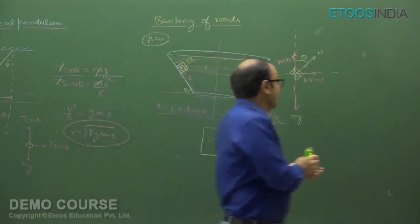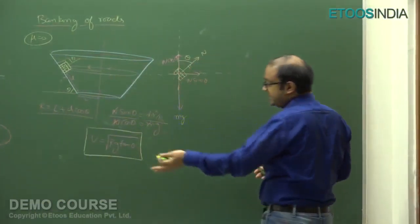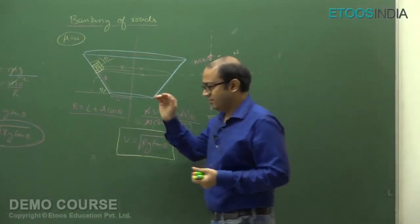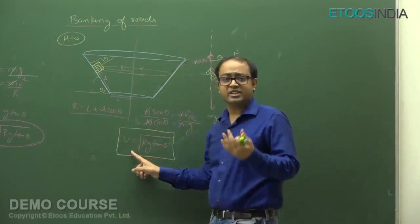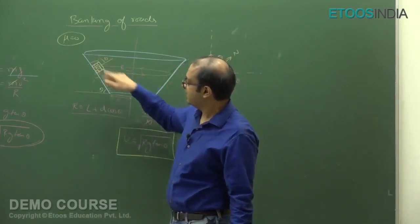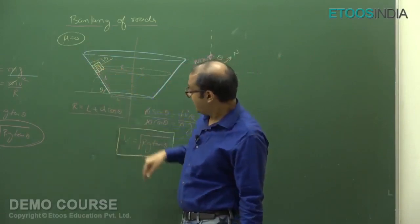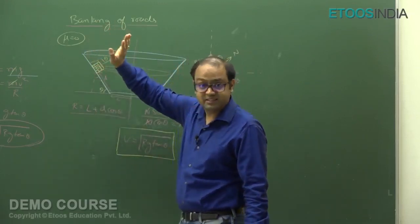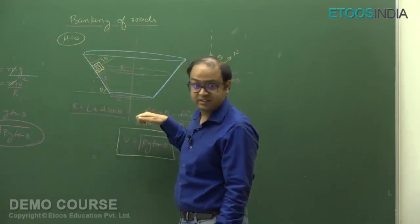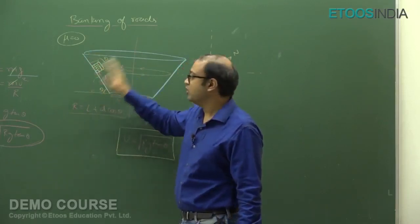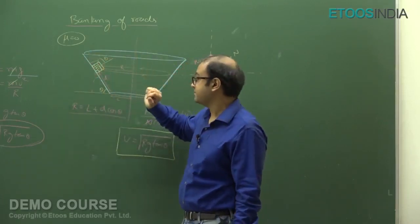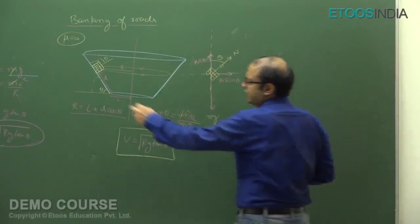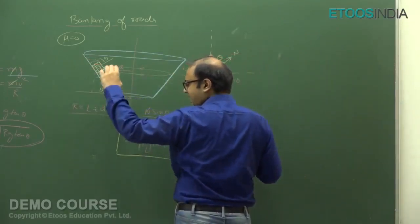For maximum velocity: the car is just about to slip outwards, so friction acts downwards at its maximum value μN. The free body diagram now includes N, and friction μN acting downward along the banked surface. If this angle is theta, then the horizontal component of friction is μN cos theta and the vertical component is μN sin theta.